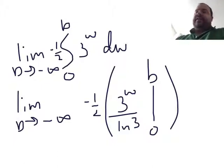So when I take the antiderivative, I get 3 to the w over ln of 3, like we talked about. I'm going to plug in b and 0 for w. And I've got this minus 1 half outside, and then last I'll take the limit as b goes to minus infinity after I do that. So let's do that on the next slide.